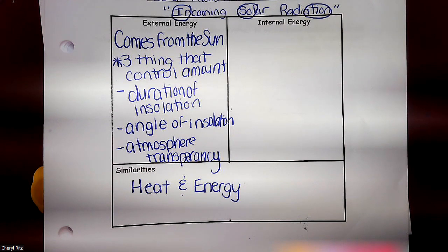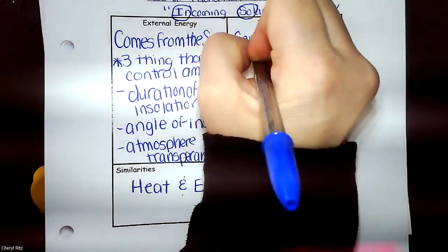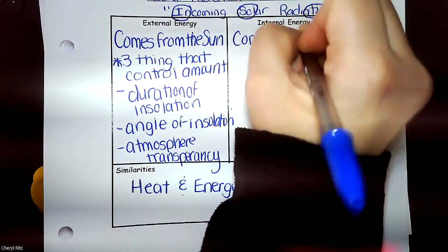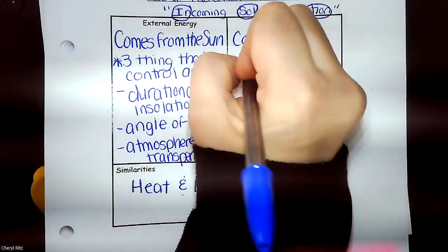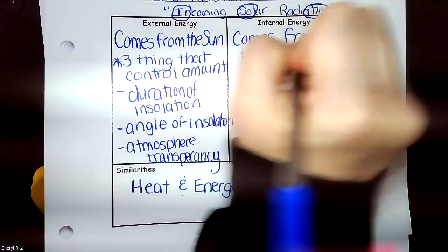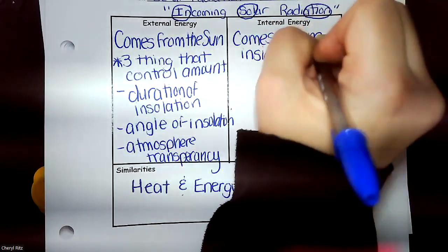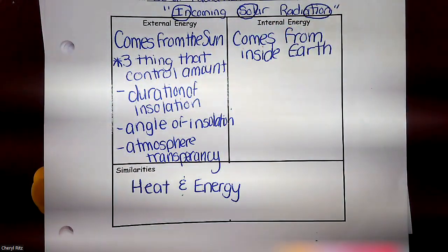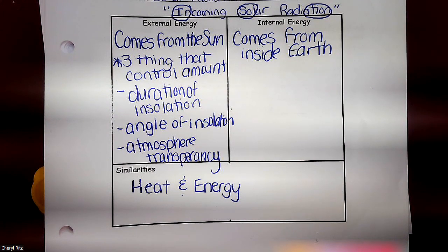How see-through the atmosphere is. External energy — that definition up there is perfect. Internal energy is energy that comes from inside. There's a little bit more differences for internal energy to add.